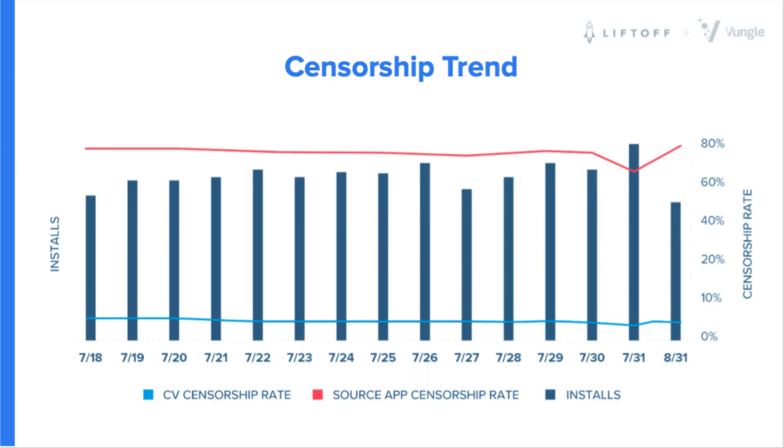The reason Apple is doing this is for privacy. In terms of the impact, we see on average that around 20% of the postbacks representing an install have a censored conversion value. So if you're a marketer trying to understand how a campaign is doing — measuring ROAS or CPAs — you're essentially dealing with a very partial data set, because 20% of the data on average is censored.